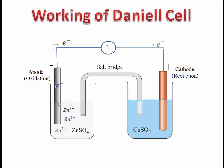These electrons migrate towards the copper rod through the external metallic wire. When the electrons reach the copper rod, the Cu²⁺ ions from the solution accept the electrons from the copper rod and get reduced to form solid copper, which is deposited over the copper rod. In this way, working of the Daniel's cell takes place. Electrons migrate externally through metallic wire and ions migrate through the salt bridge or porous pot, so the cell reaction is completed and current is produced, causing the galvanometer to show deflection.